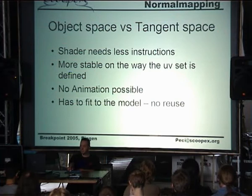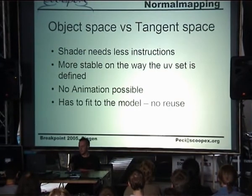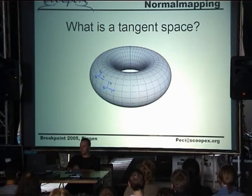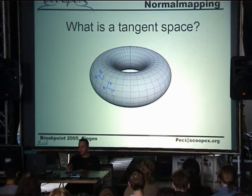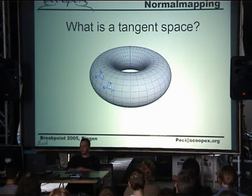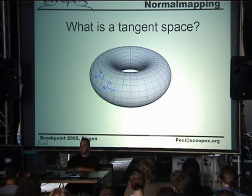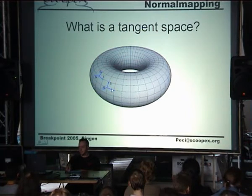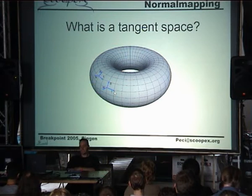What people do instead of using object space is use the normal map in tangent space, which is kind of relative. So what is tangent space? It's relative to the object position. You take the UV information and transform it into 3D space, creating a matrix out of three vectors. One vector is the normal from the object, the second vector is called the tangent — which is basically the U-direction in 3D space — and the binormal is the V-direction in 3D space.